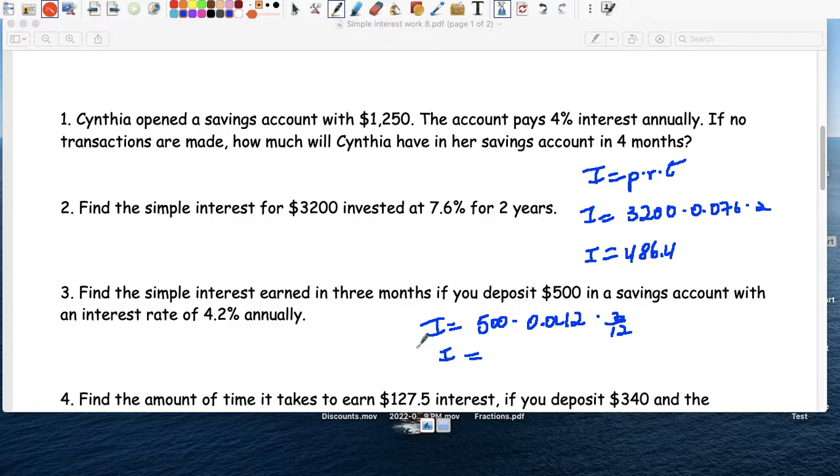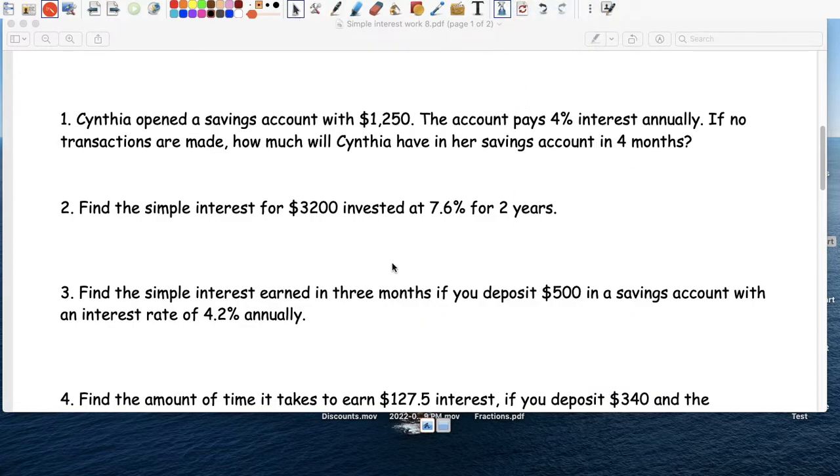But the amount of money that you would earn would be $500 times 0.042 times 1 over 4, or 0.25, and the amount of money that you would get is $5.25. Not much, but hey, like a Trojan class, nobody's going to give you that free money.